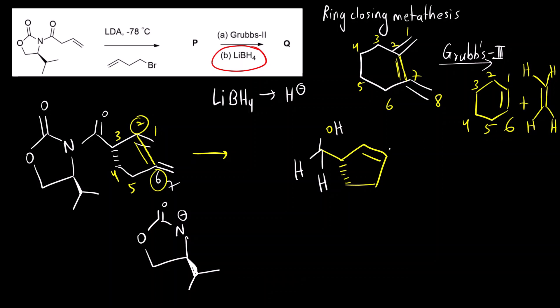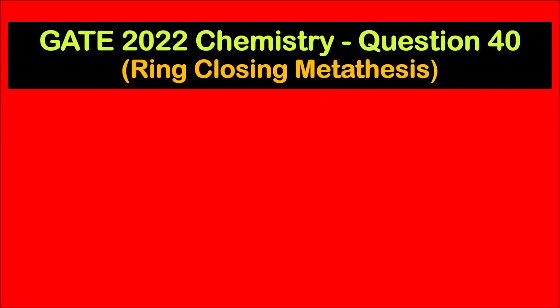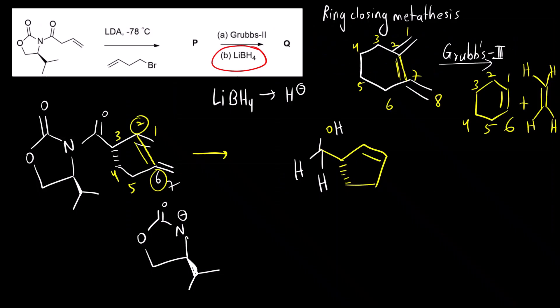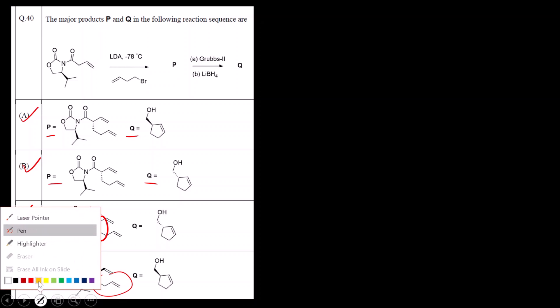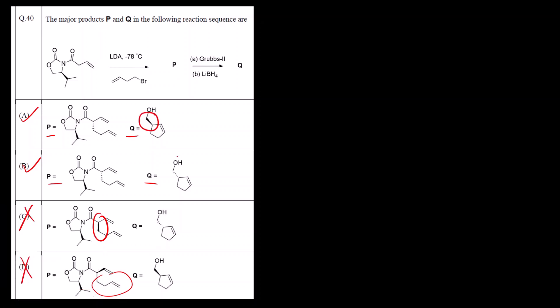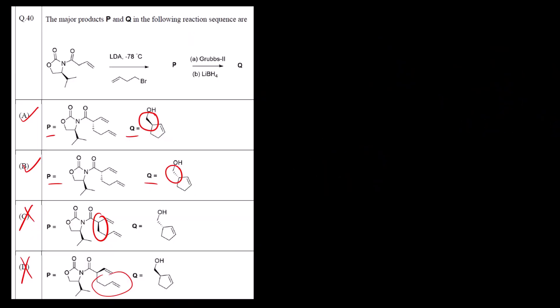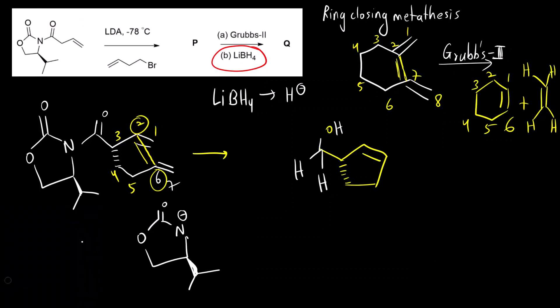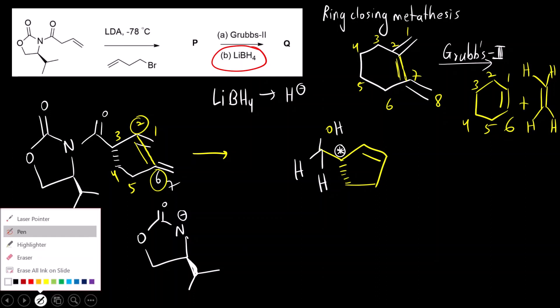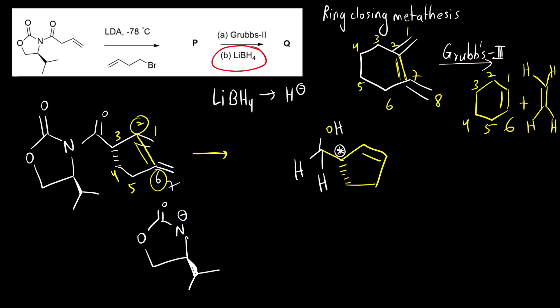Now we can see a CH2OH alcohol group is present either above or below the plane in the answer options. We need to take care of the stereochemistry. This is the chiral carbon, so we will find out the absolute configuration — whether it is R or S — and the same stereochemistry must be maintained in the product.